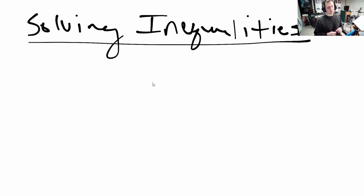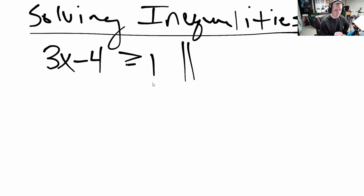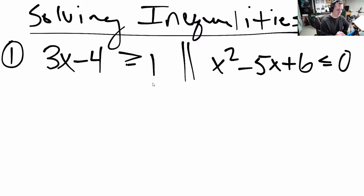So we know how to algebraically manipulate these things now, but what if we're working on something like this: 3x minus 4, just to pull our original example, what if you want to find where 3x minus 4 is bigger than 1? Or what if you wanted to find something a little bit more difficult like x squared minus 5x plus 6 is less than or equal to 0?